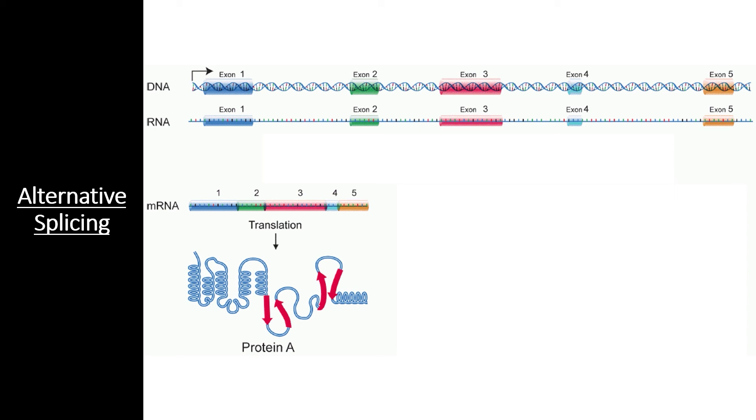In regular splicing and processing, all of the introns for each gene get cut out and spliced back together to create the final mRNA transcript. To understand why this process can easily change, let's take a closer look at how RNA processing actually works.